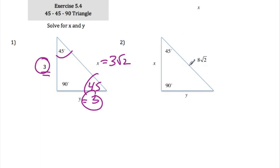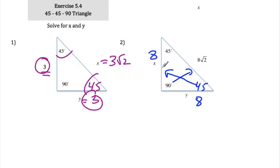We can do the reverse of that. If opposite the 90 is something radical 2, then opposite the 45s has to be just the base number — so 8 and 8. Because when you go from the 45 side to the side opposite the hypotenuse, you multiply by radical 2. Going the other way, you divide by radical 2. This will be important in the next example.